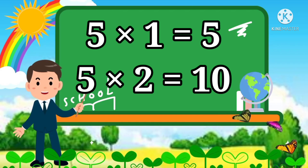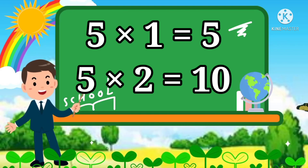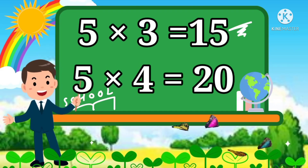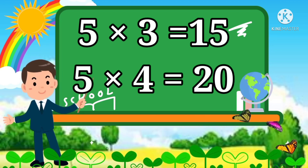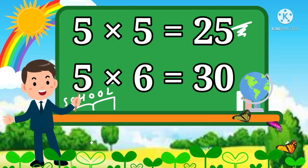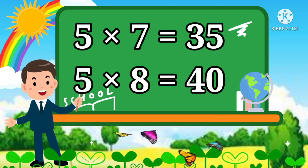5 1s are 5. 5 2s are 10. 5 3s are 15. 5 4s are 20. 5 5s are 25. 5 6s are 30.